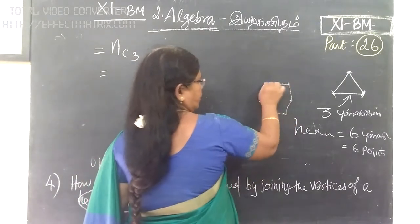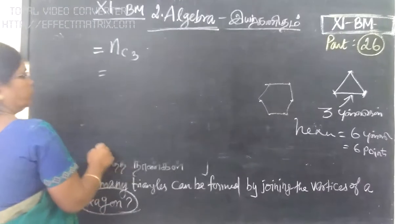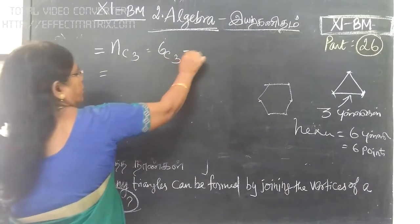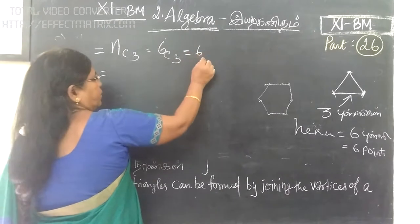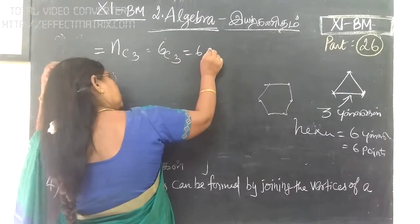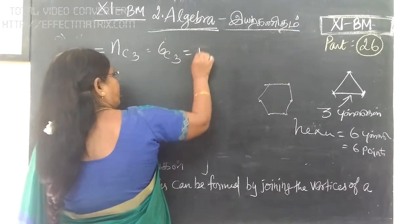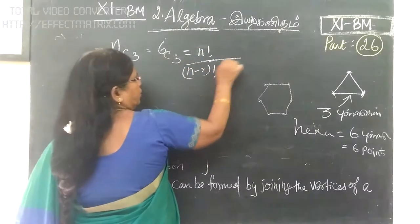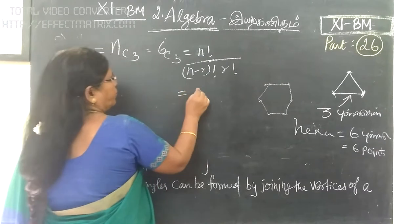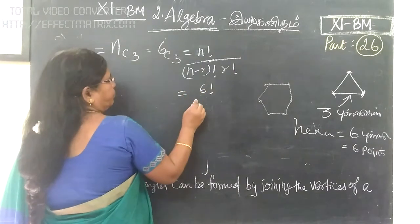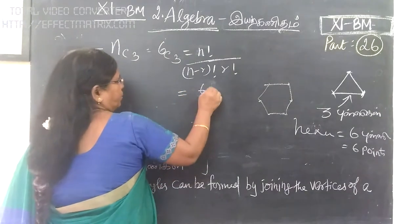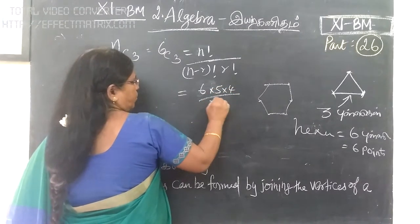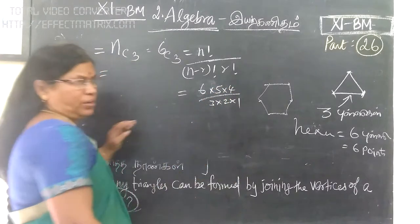We have n equal to 6, and nC3 equals 63. So where n equals 6, we use 6 into 5 into 4 divided by 3 into 2 into 1.